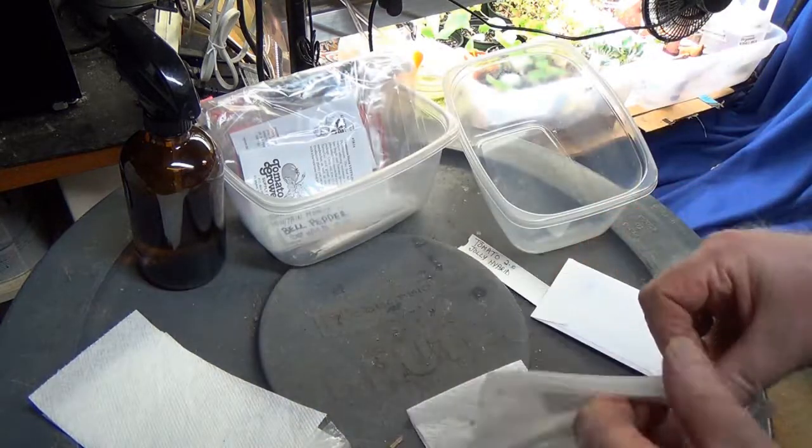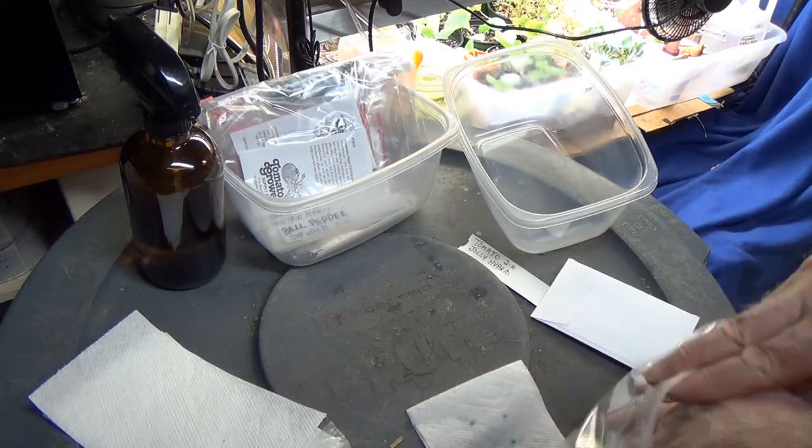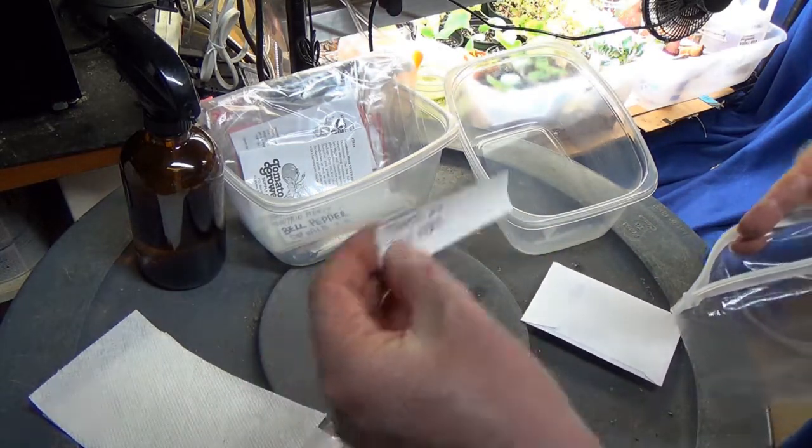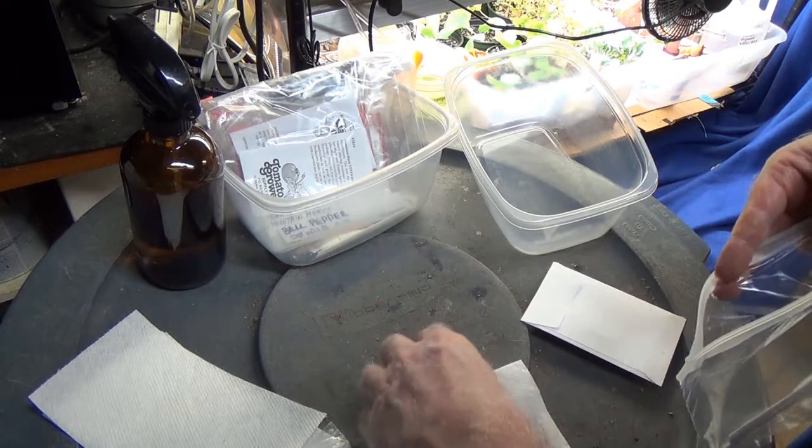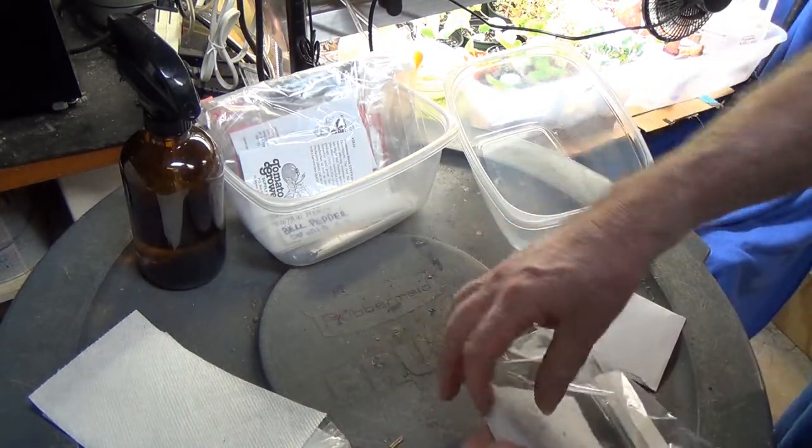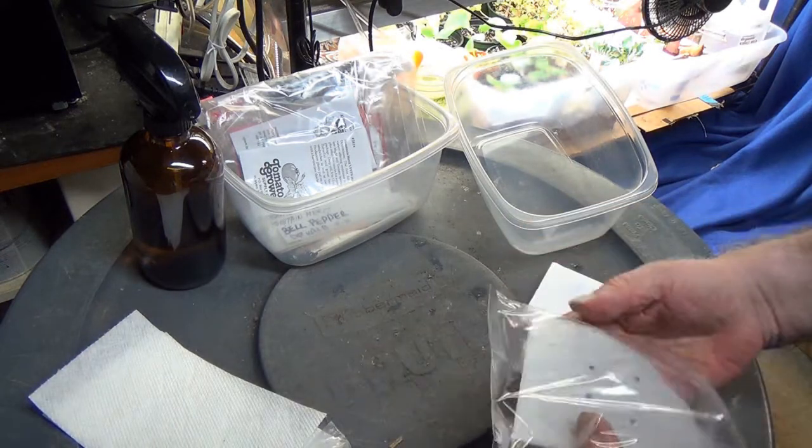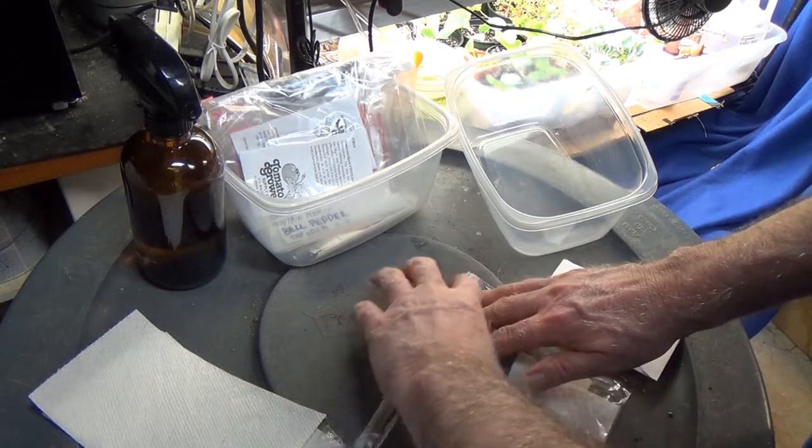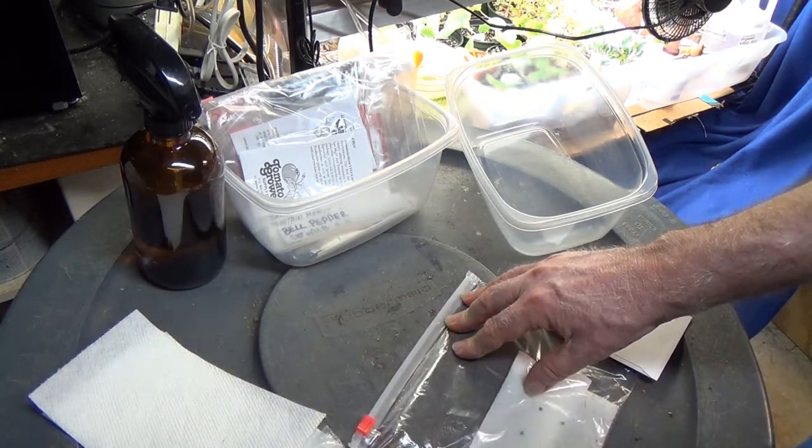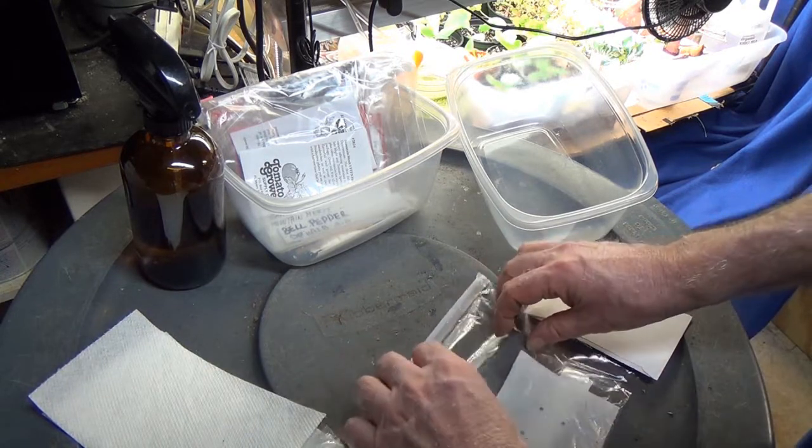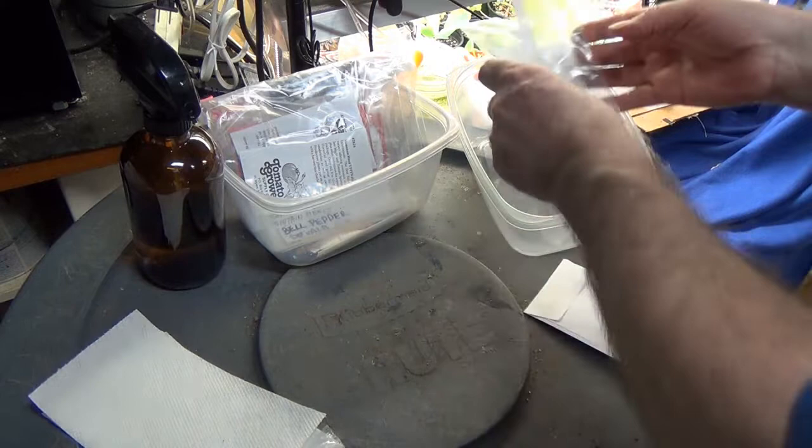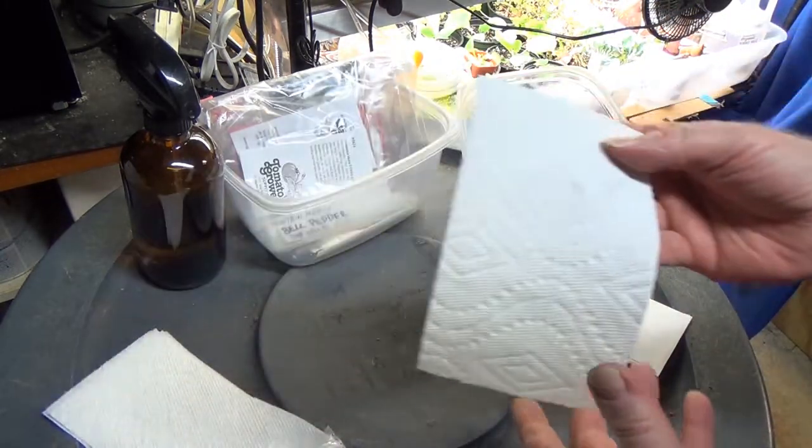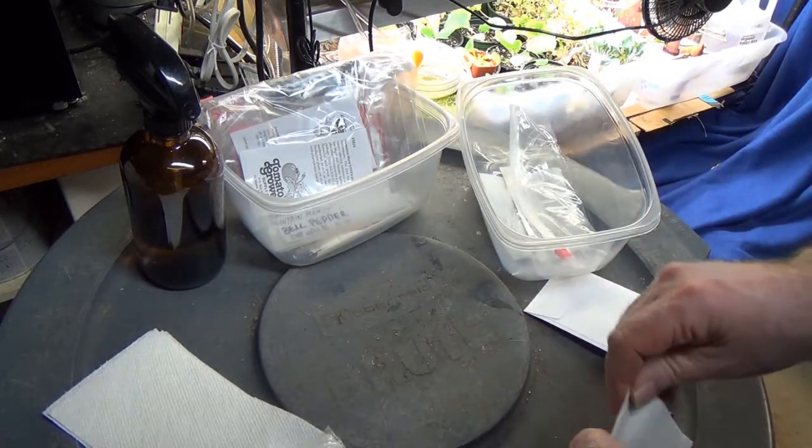Okay, I'm going to take a Ziploc plastic sandwich bag, take my label - tomato Jolly Hybrid - slide that in, slide this in. As you can see, there it is. Now when they grow roots, I don't want the roots going into the paper towel, so they're going to be stored upside down. Paper towel on top, roots down, seed down, so the roots don't go directly into the paper towel.